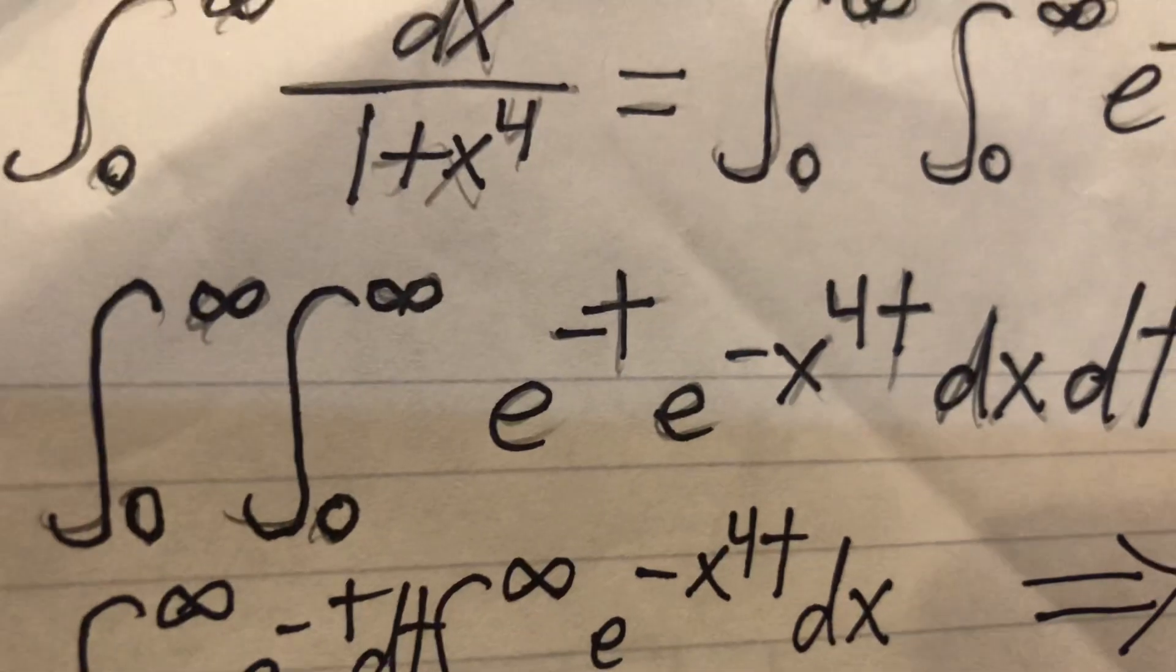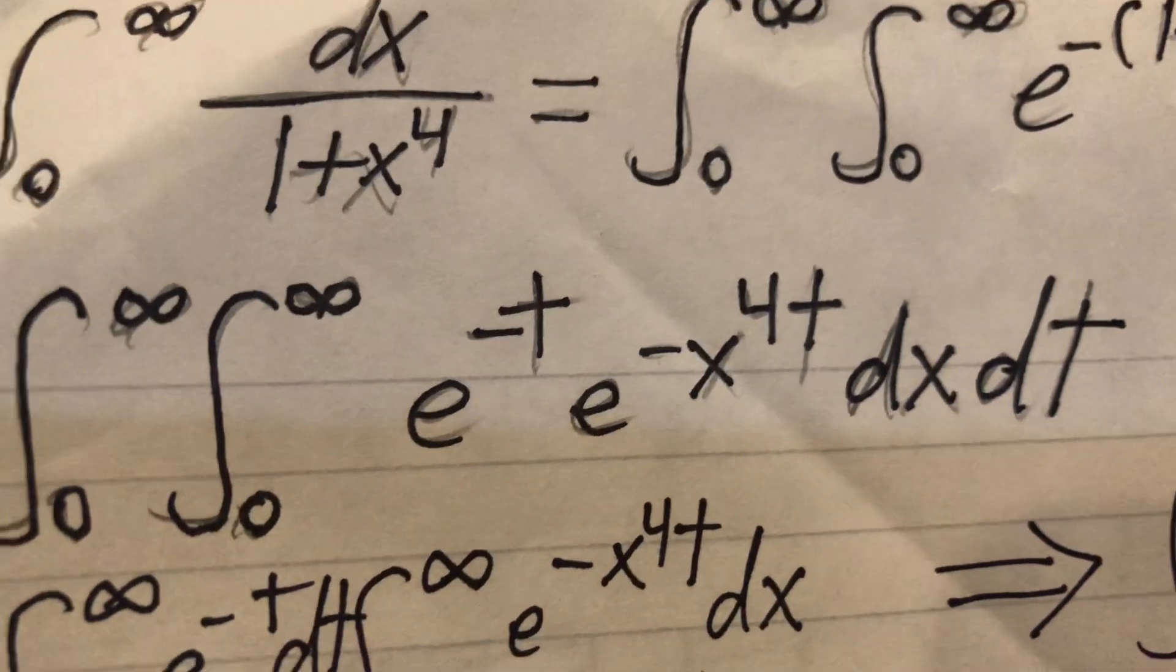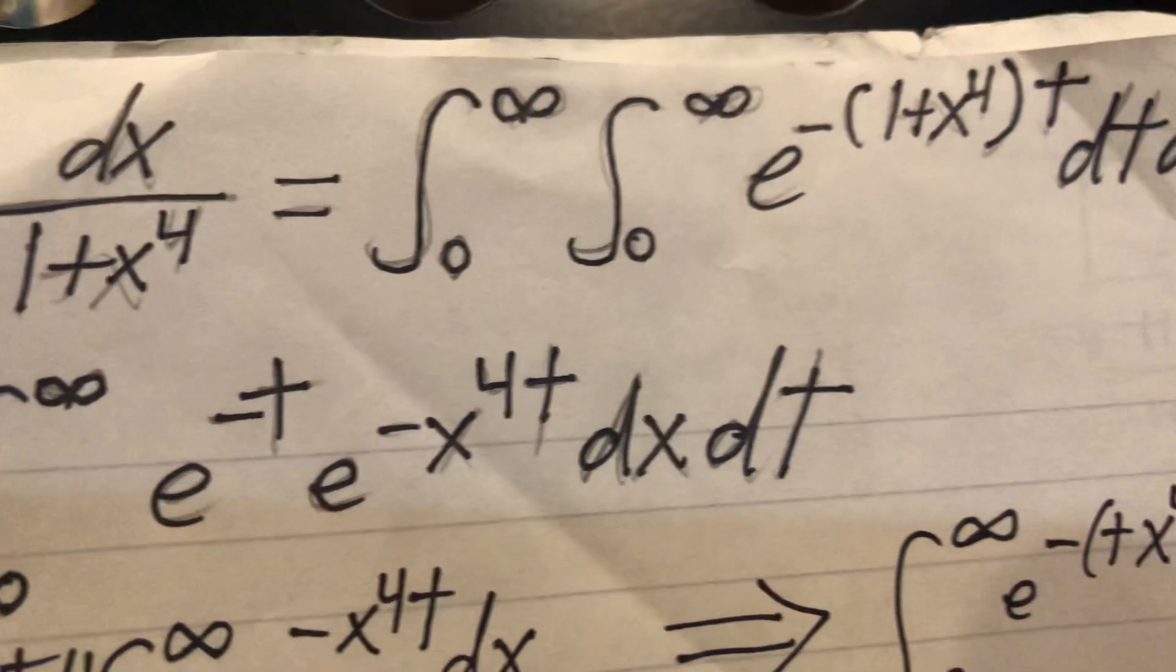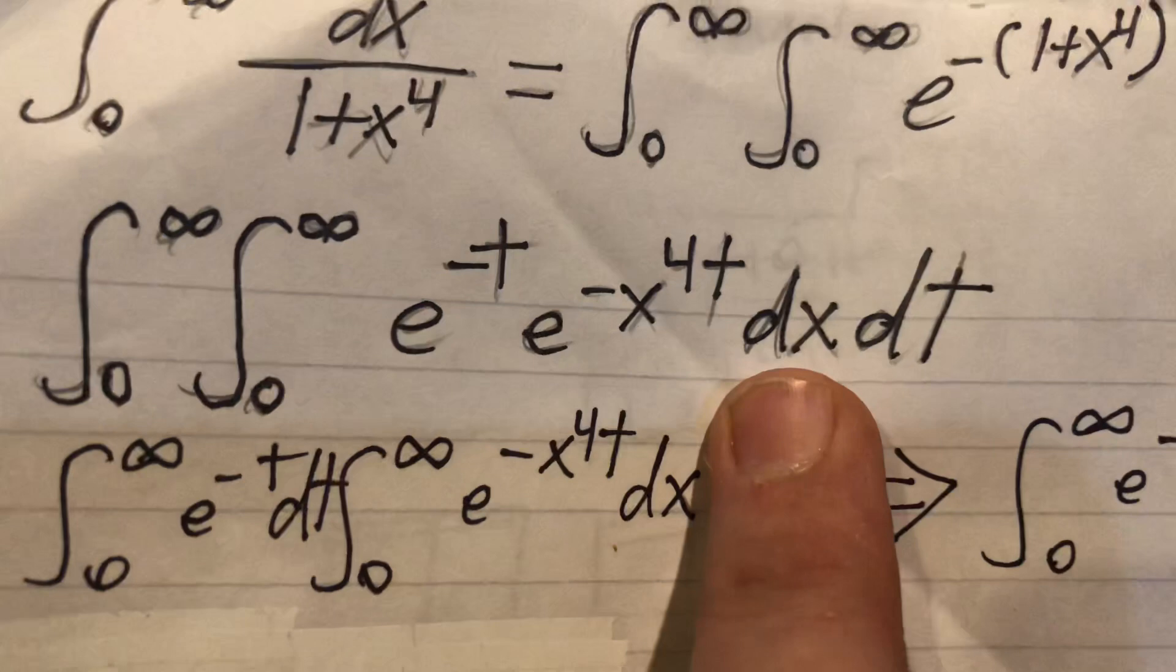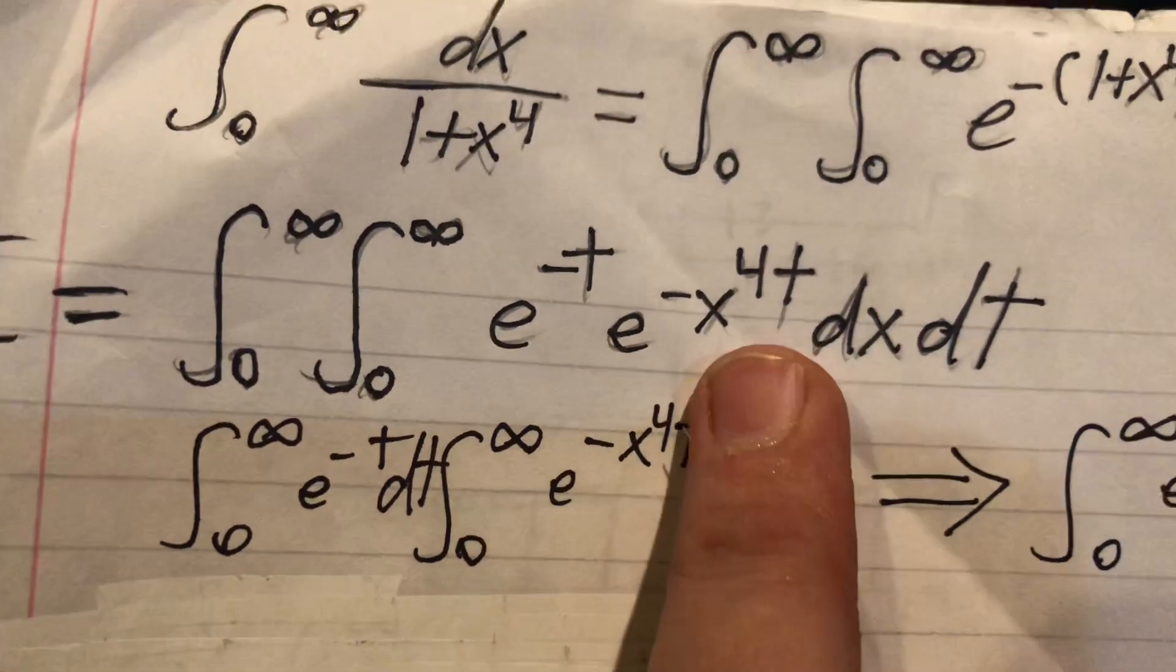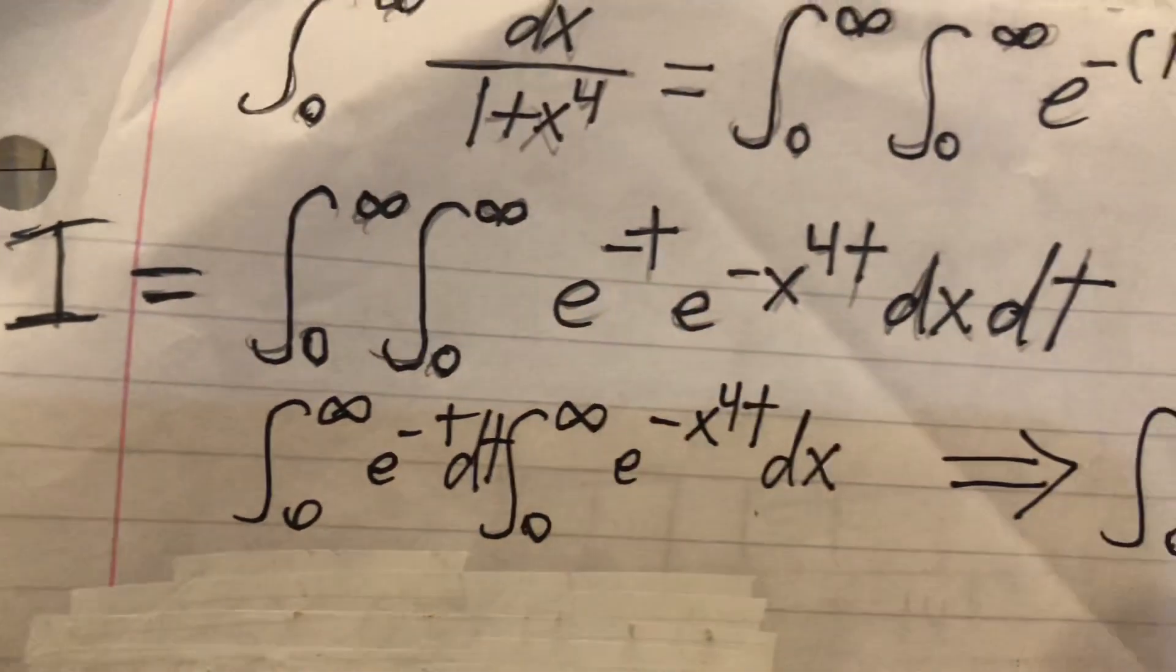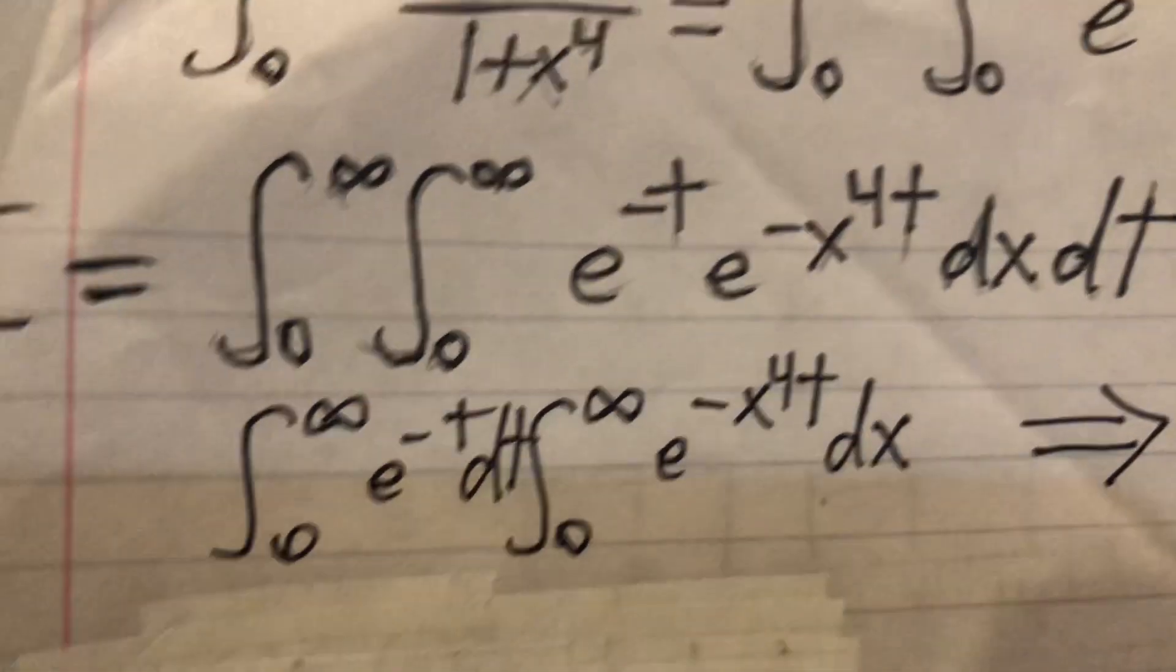So we put it in there and here's what you get - you get two integrals. Now we don't want to do the integral with respect to dt because that's what we started with. So we want to switch that and integrate with respect to x. So anything with or without x in it, come on in, join the party.